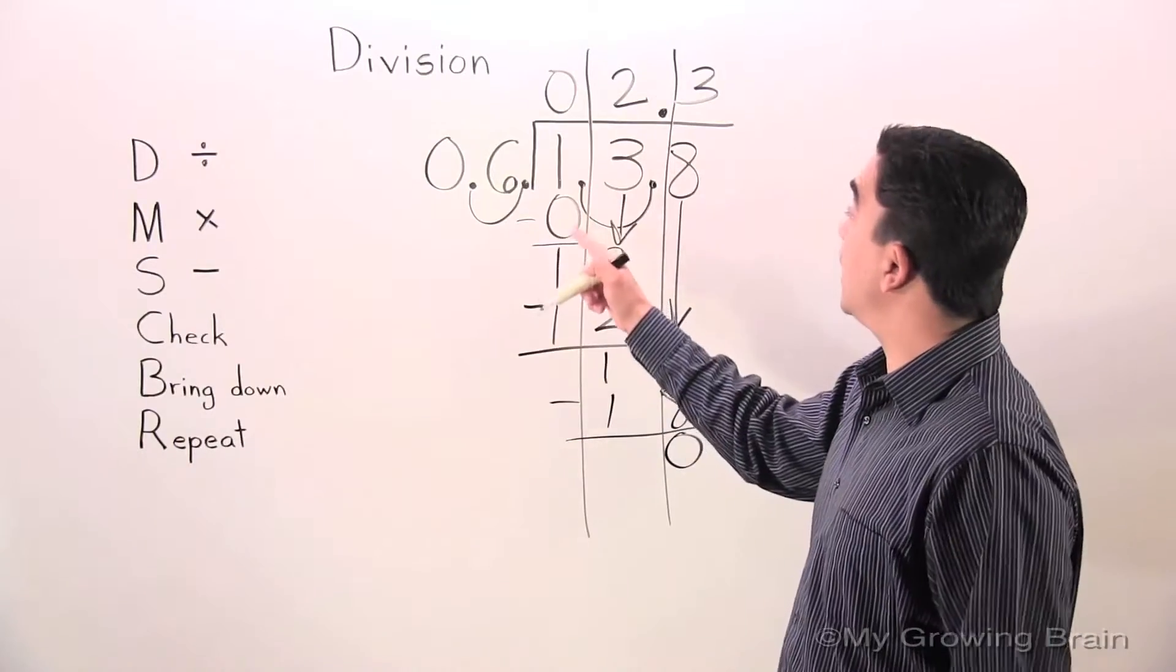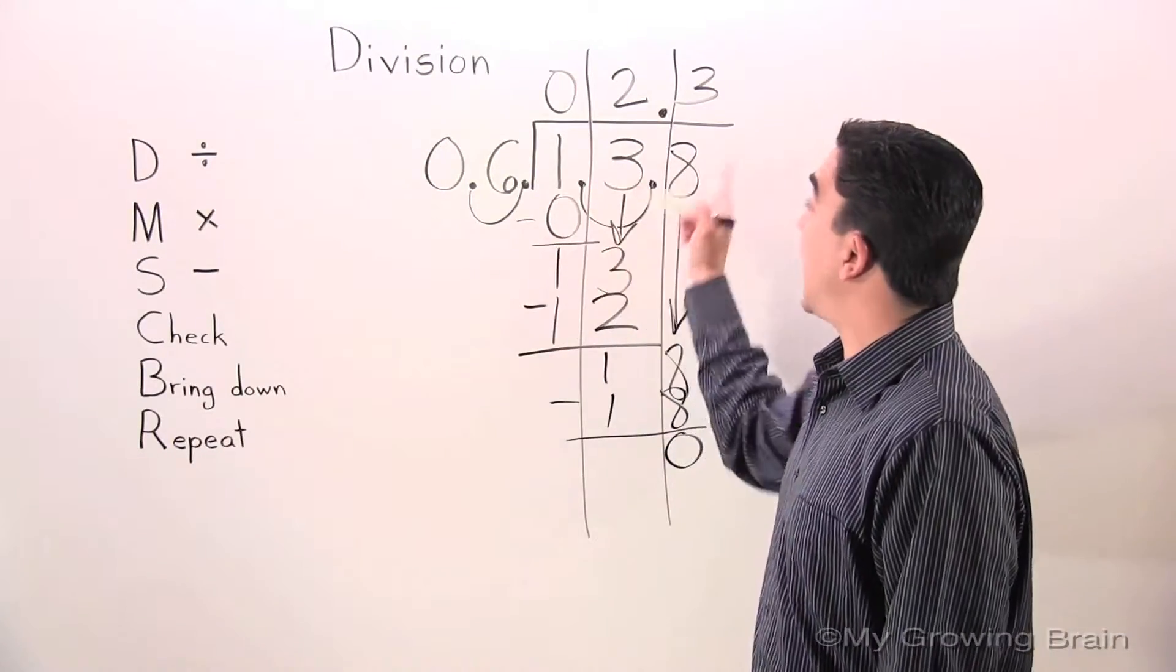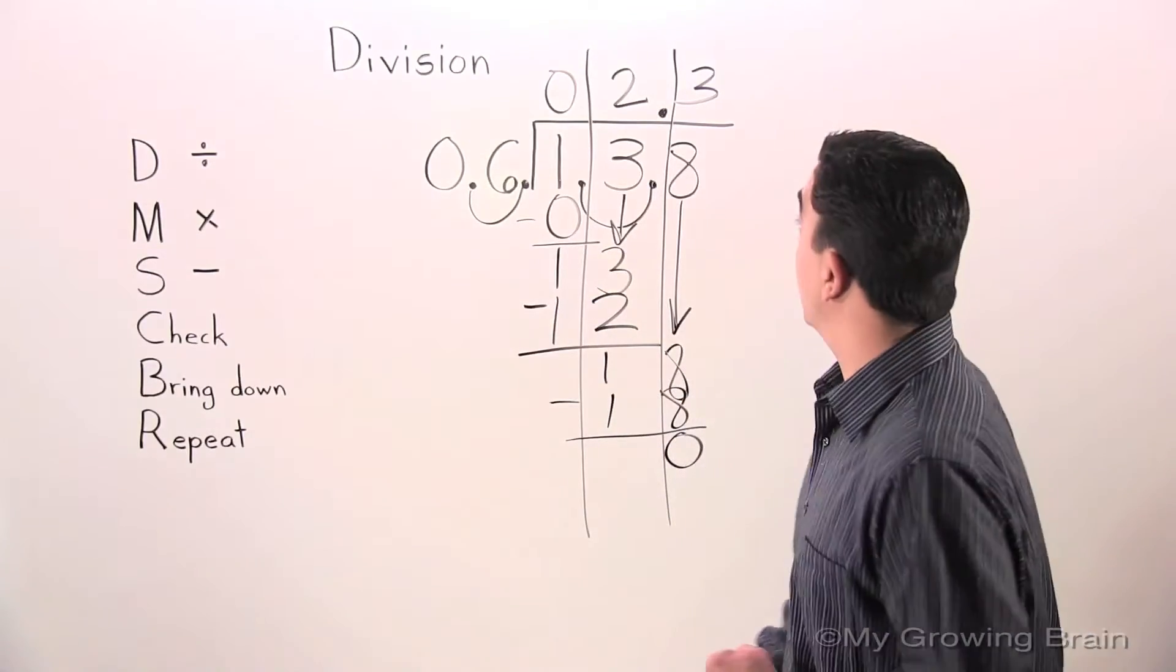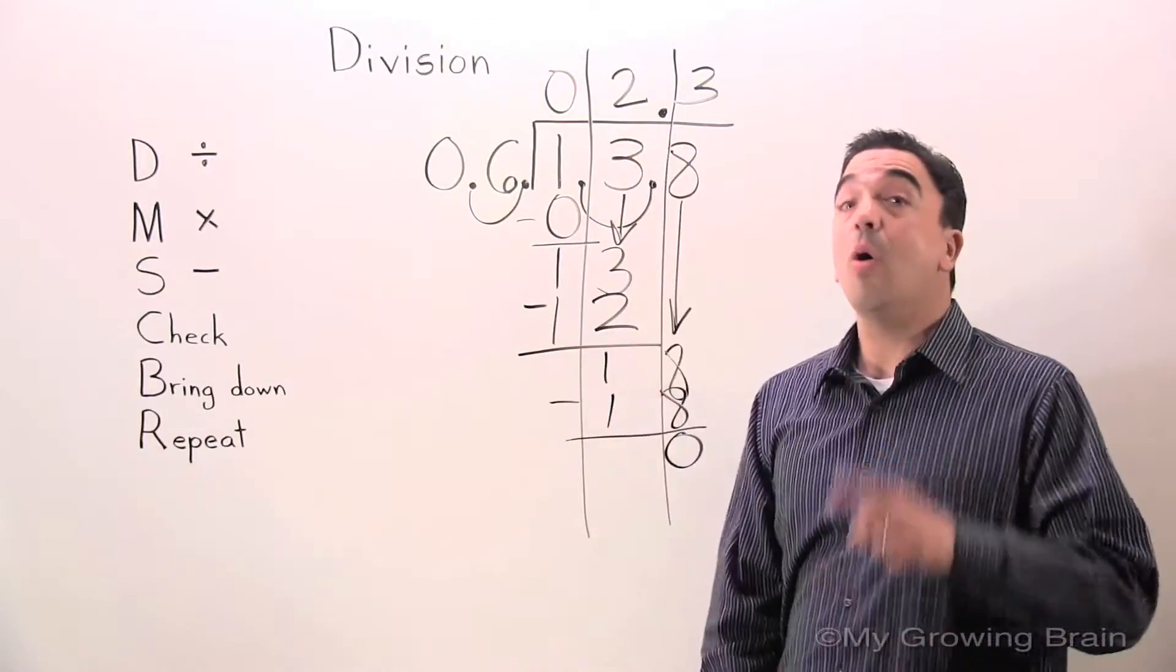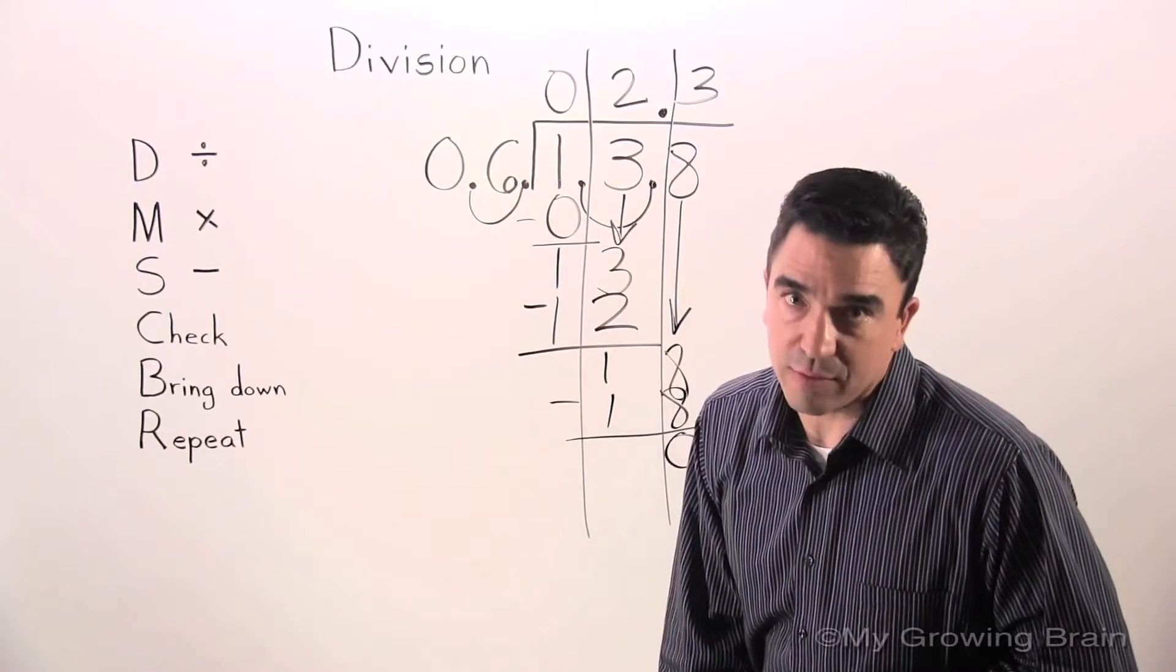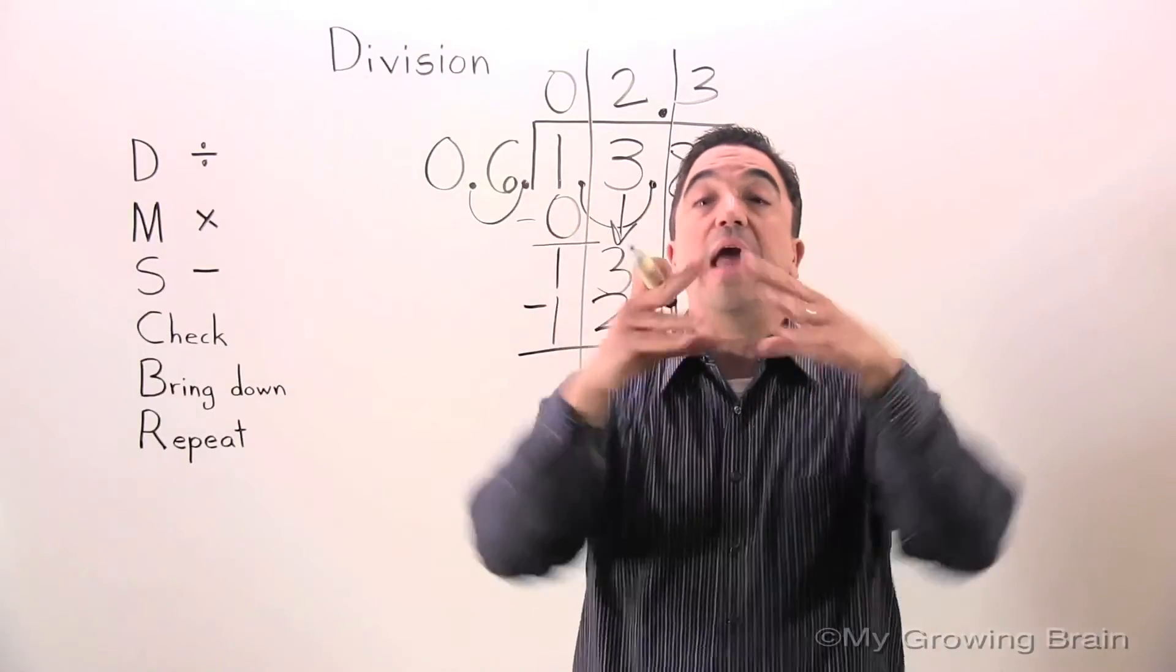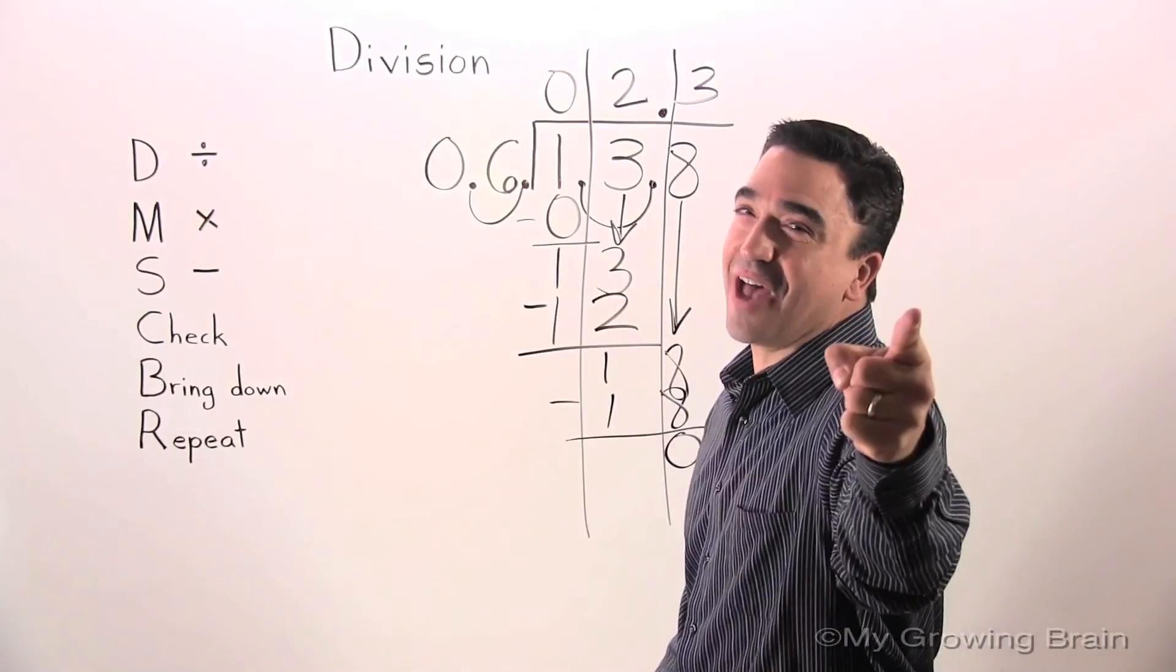Therefore, I'm sorry, one point three eight divided by point six gives us a quotient of two point three, or two and three tenths. That concludes our lesson on division. Coach Mike at Mind Growing Brain Challenge Yourself.